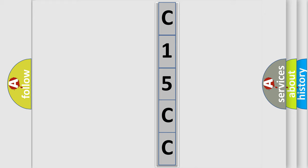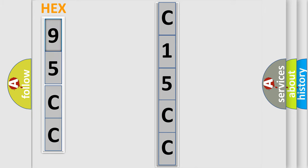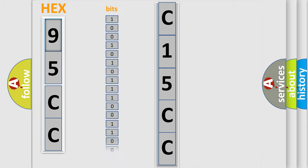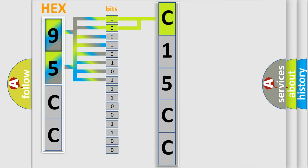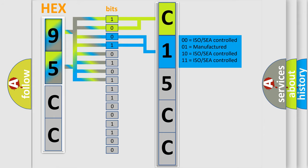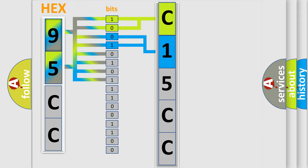The error code is split into two bytes consisting of 16 bits. One bit is the basic unit that each computer works with. The bit has two logical states: zero, low level, and one, high level. By combining the first two bits, the basic character of the error code is expressed. The next two bits determine the second character, and the last bits of the first byte define the third character of the code.